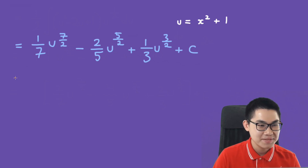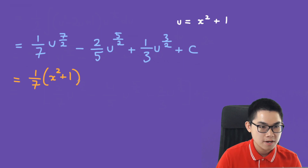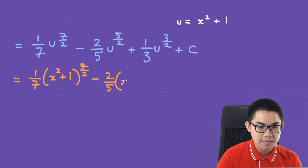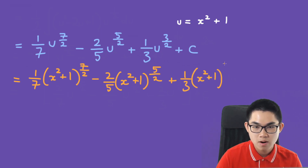Back-substituting u equals x squared plus 1, the final answer is: 1 over 7 times (x squared plus 1) to the power of 7 over 2, minus 2 over 5 times (x squared plus 1) to the power of 5 over 2, plus 1 over 3 times (x squared plus 1) to the power of 3 over 2, plus C.